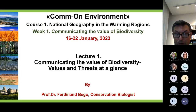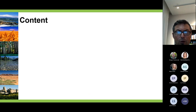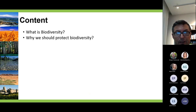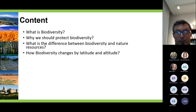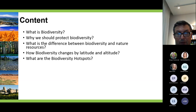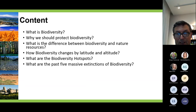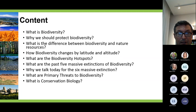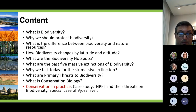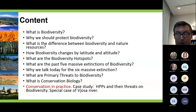During the first lecture and presentation, we are going to talk briefly about what is biodiversity and why we should protect it, what is the difference between biodiversity and natural resources, how biodiversity changes by latitude and altitude, what are the biodiversity hotspots of the world today, what are the past five massive extinctions, and why we talk today about the sixth massive extinction, what are the primary threats of biodiversity, what is conservation biology, and a good part of the presentation will be dedicated to conservation in practice, with insights about impacts or threats imposed by hydropower plants on biodiversity, with a special case: the Vjosa River.